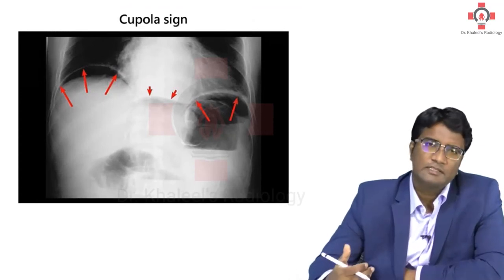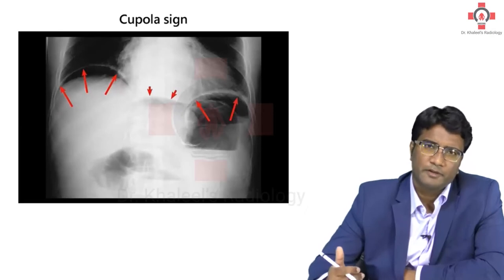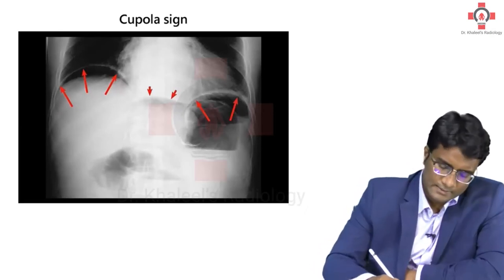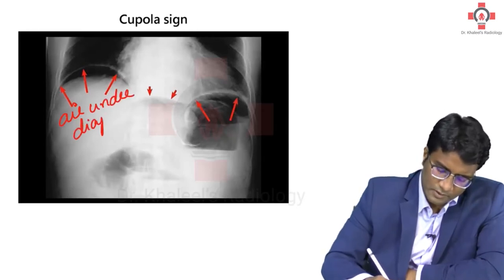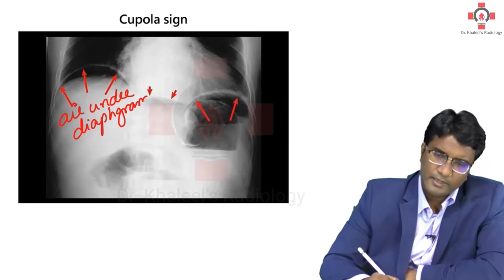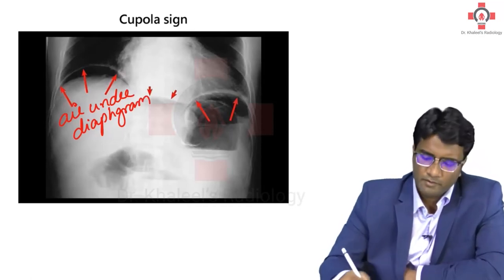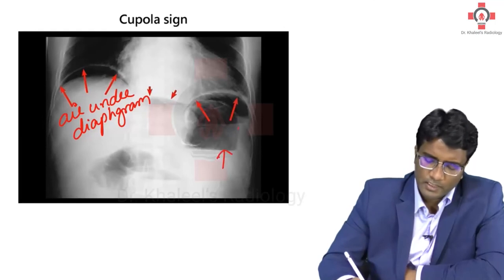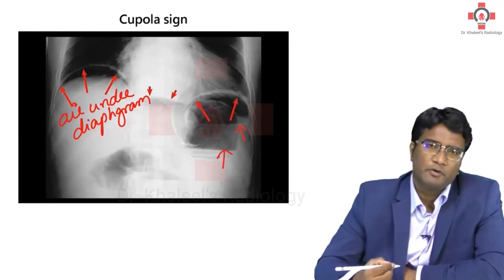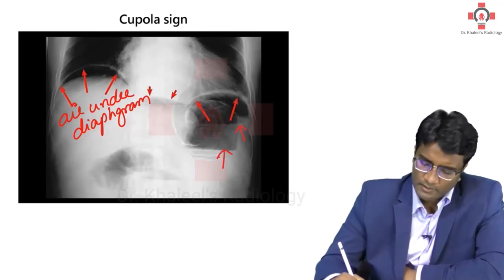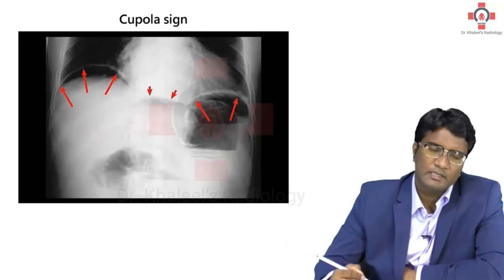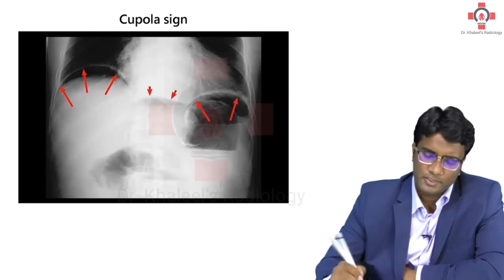Let us look at the various signs of pneumoperitoneum on abdominal radiograph. The important sign is air under the diaphragm. Specifically concentrate under the right dome of the diaphragm. If you see air under the right dome of diaphragm — noting that under the left dome you will also have the gastric bubble — it is better to look at the right hemidiaphragm. Air under the right dome of diaphragm suggests a hollow viscous perforation.